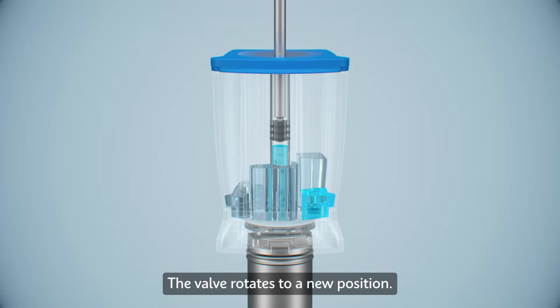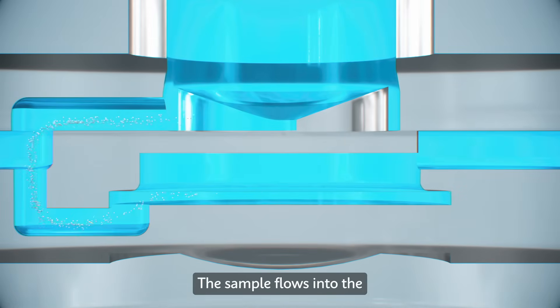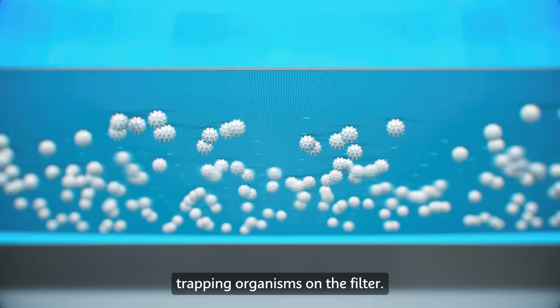The valve rotates to a new position. The plunger lowers, pushing the sample into the active area. The sample flows into the active area and through the filter, trapping organisms on the filter.